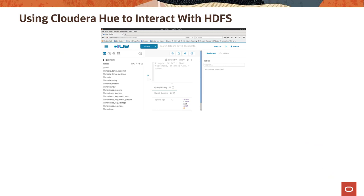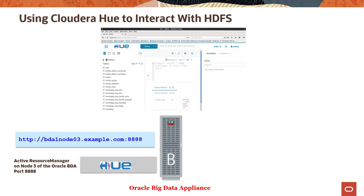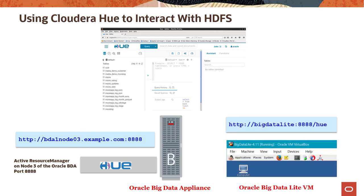Hue runs in a browser and provides an easy-to-use interface to several applications to support interaction with Hadoop and HDFS. Hue is automatically installed and configured on the Oracle Big Data appliance. It runs on port 8888 of the Resource Manager node, which is node 3 by default. Hue is also automatically installed and configured on the Oracle Big Data Lite VM, and it also runs on port 8888.